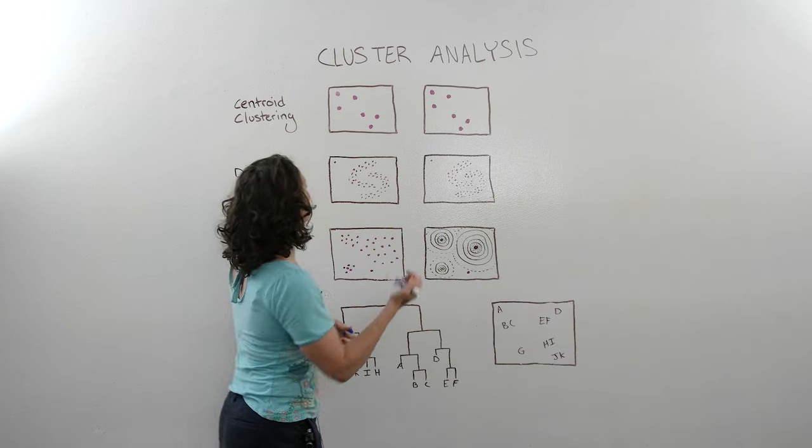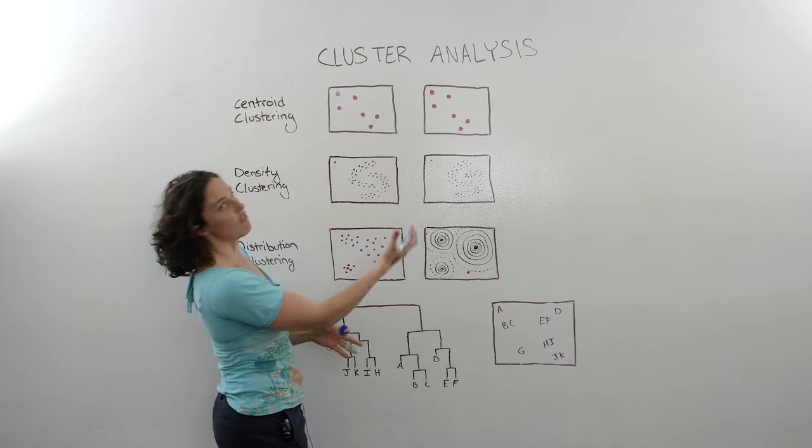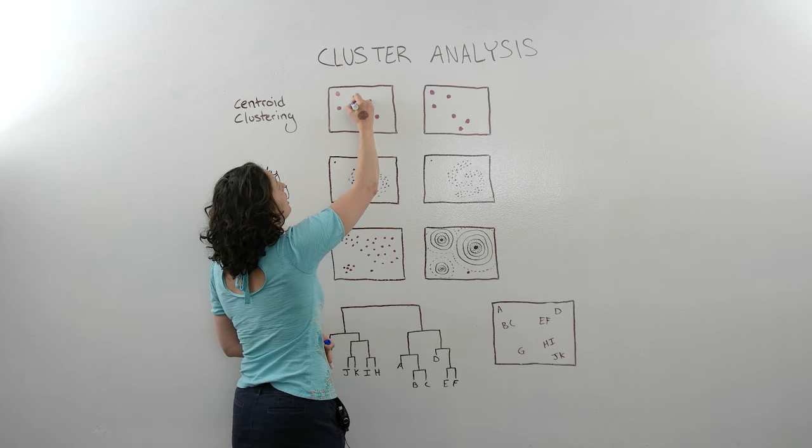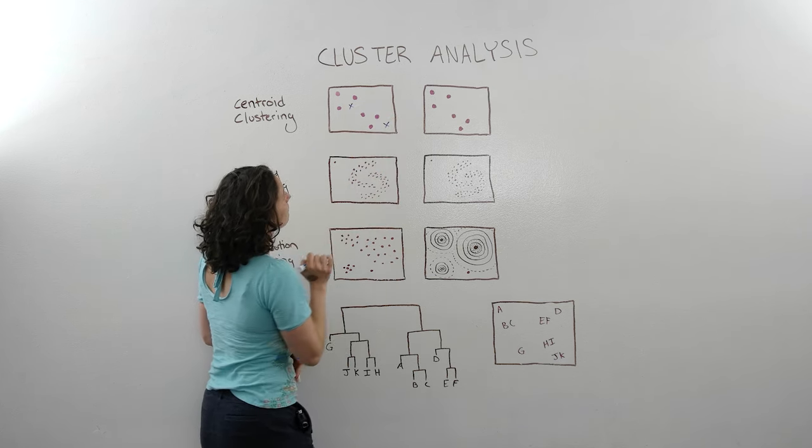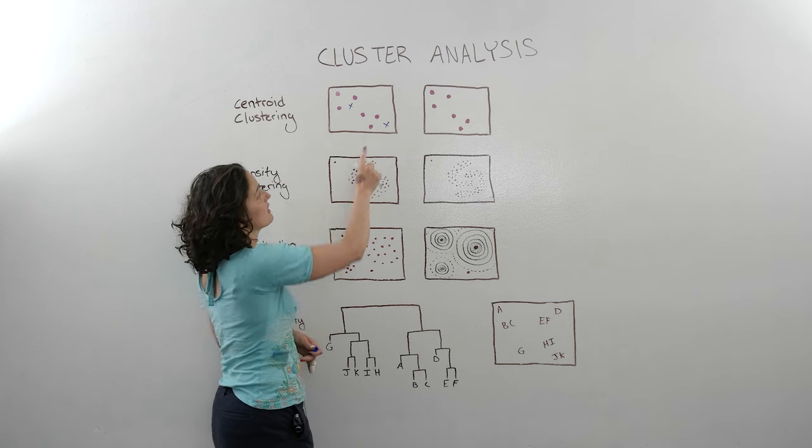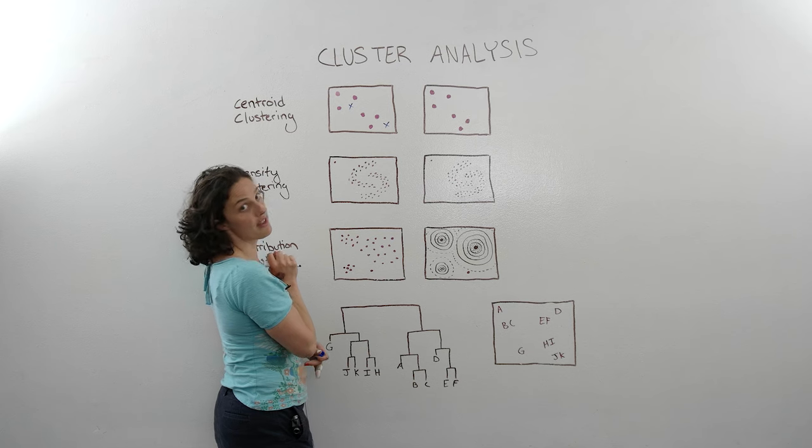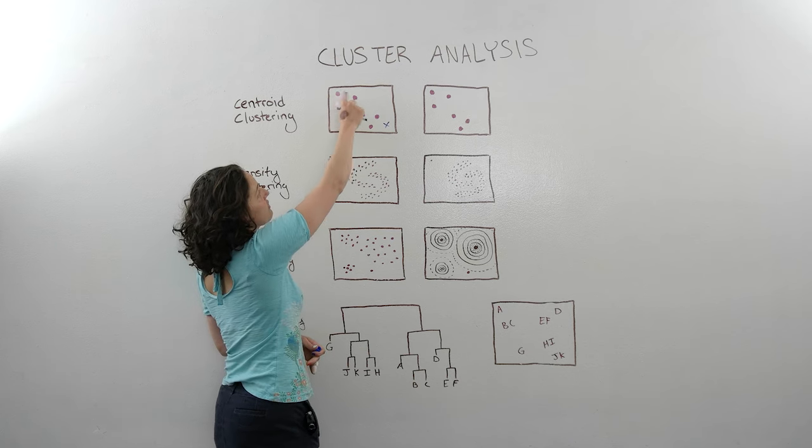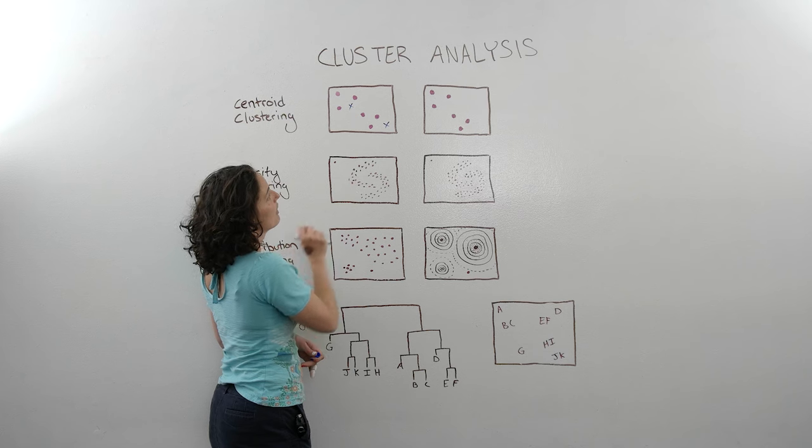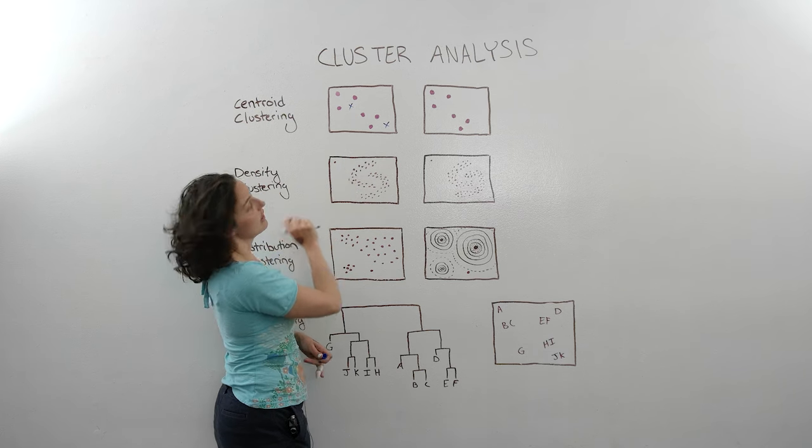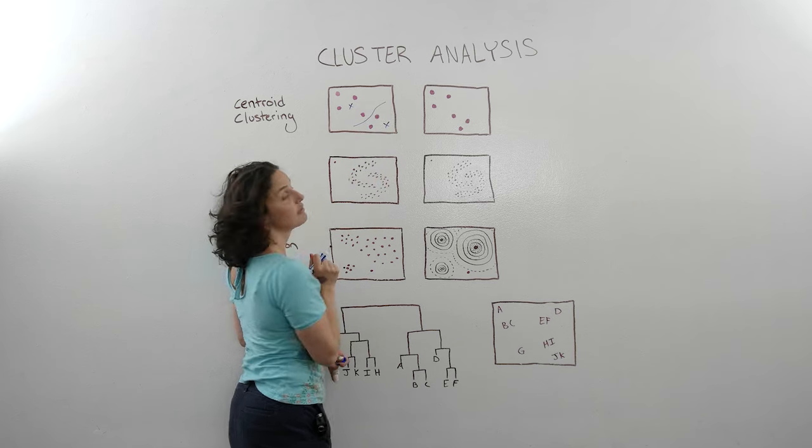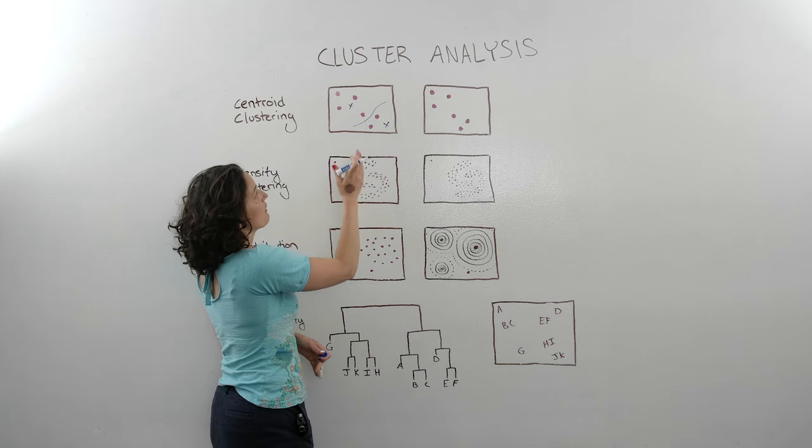For example, in the beginning of an algorithm, you would randomly choose centroids. So we're going to put one here and one here. These two points belong to this centroid because they're closer to this one than they are to that one. And likewise with these three. This one's kind of marginal, it's a little bit closer to this guy. So we're going to draw the line right there. So now we have two clusters.